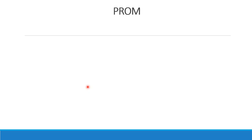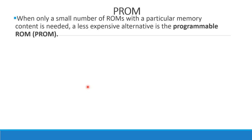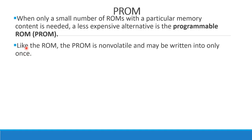Now we start the modifications. The first modification is PROM — Programmable ROM. When only a small number of ROMs with a particular memory content are needed, a less expensive alternative is the programmable ROM, called PROM. PROM is non-volatile and may be written into only once — it is the same as ROM in that regard.